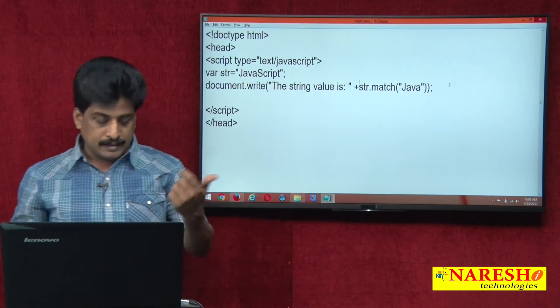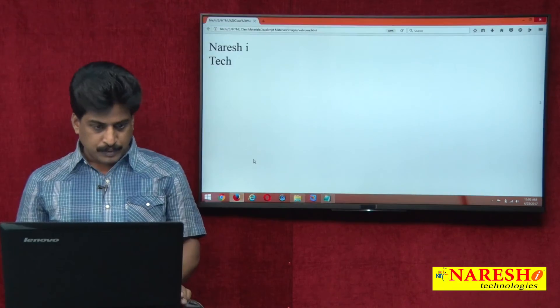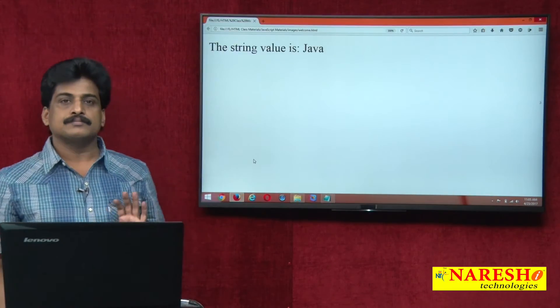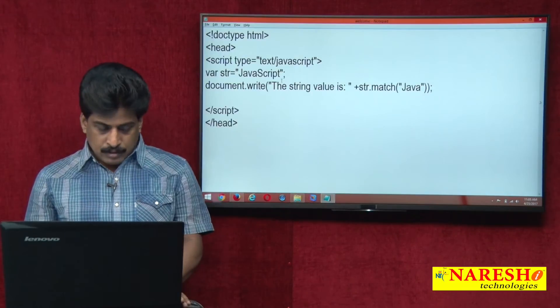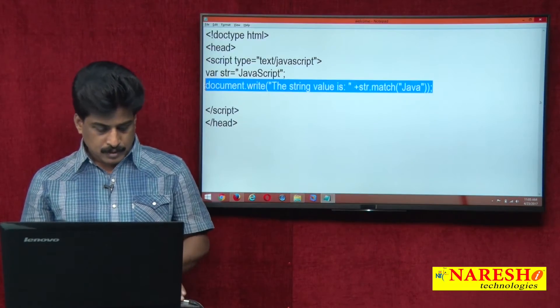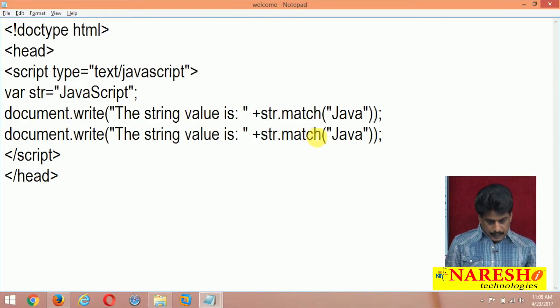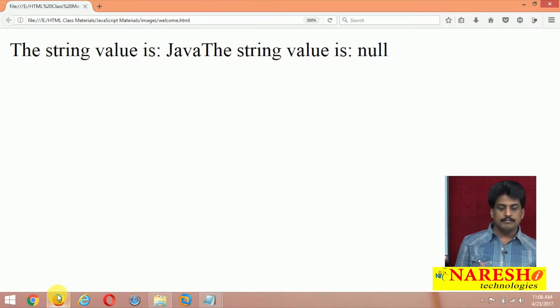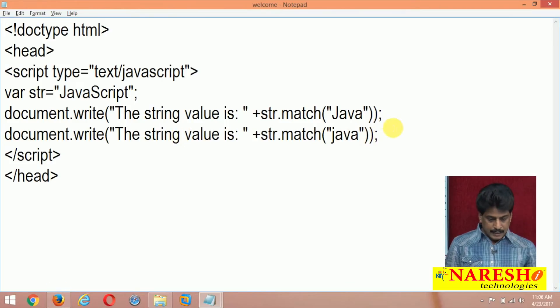Java existed here, also Java existed. I think it is returning Java string perfectly, exactly perfect. Now I am taking the same statement. Let me duplicate that, and string dot Java lowercase I am providing. So second value null must be returned. Returning or not we can observe. Perfect.